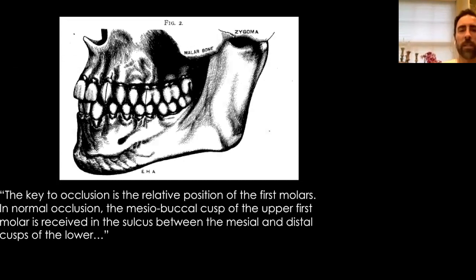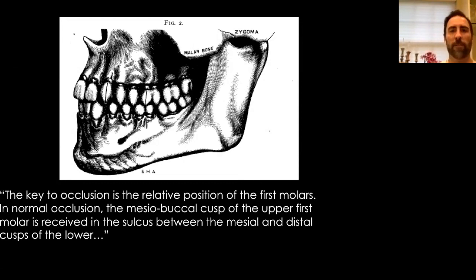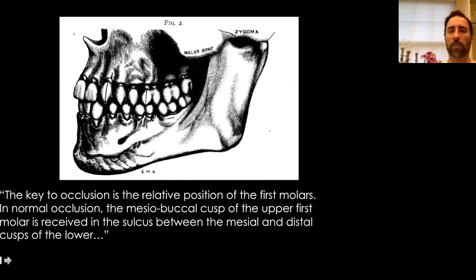This is the original image from 1899 from Dr. Engel, who's probably one of the fathers of modern orthodontics. He shows a certain relationship here of how the teeth should be hitting to call it a class one. You might be wondering why I'm sort of talking about this.